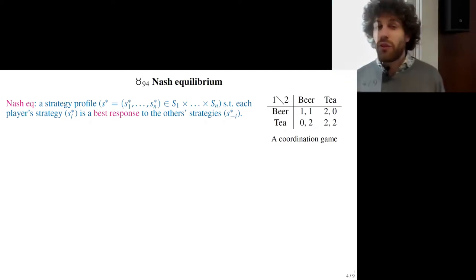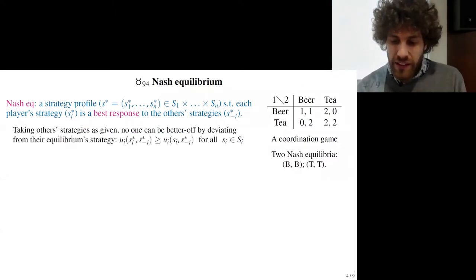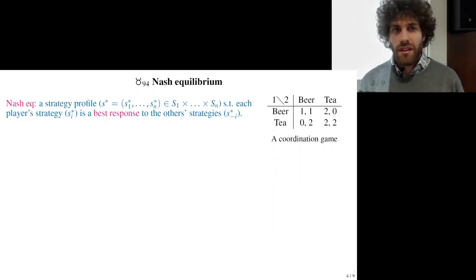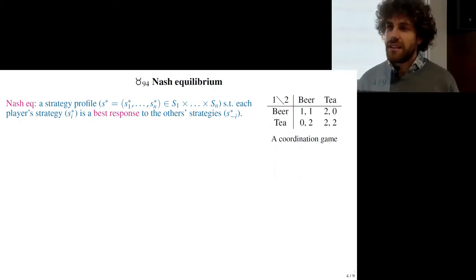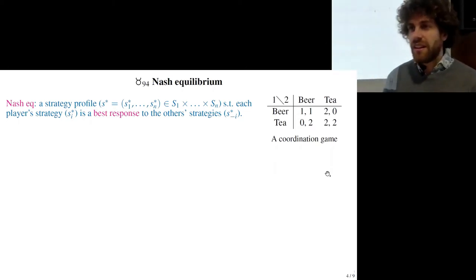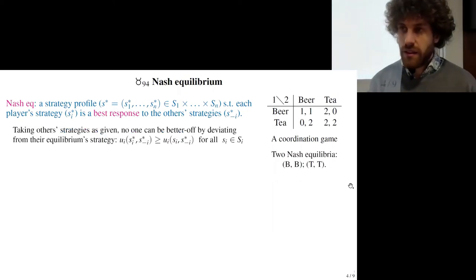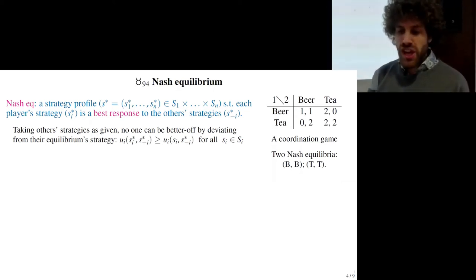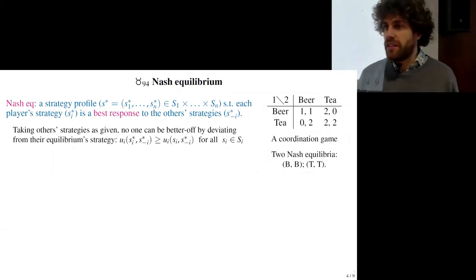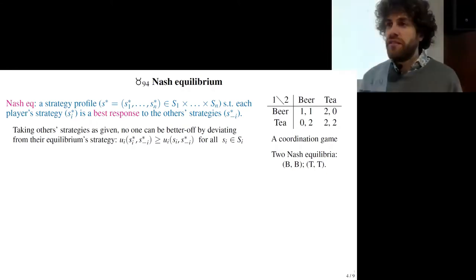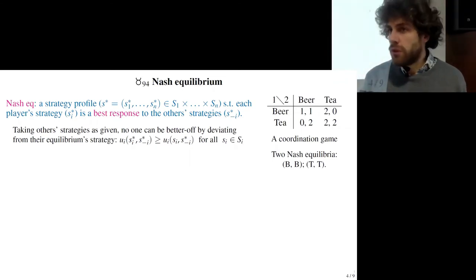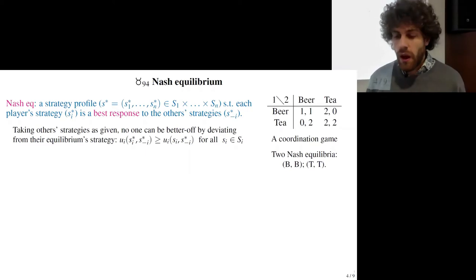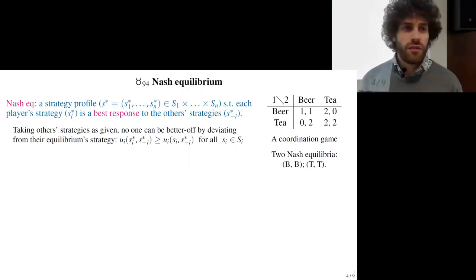Indeed, in this game: what are the Nash equilibria? If the two choose the same, you get less reward by deviating. Exactly — so in this game there are two Nash equilibria. Either both choose beer, in which case you have no interest to deviate because then you get zero instead of one, or both choose tea. If you deviate and choose beer instead, you also get two — but it's not an improvement. So these two outcomes are Nash equilibria and the others are not.